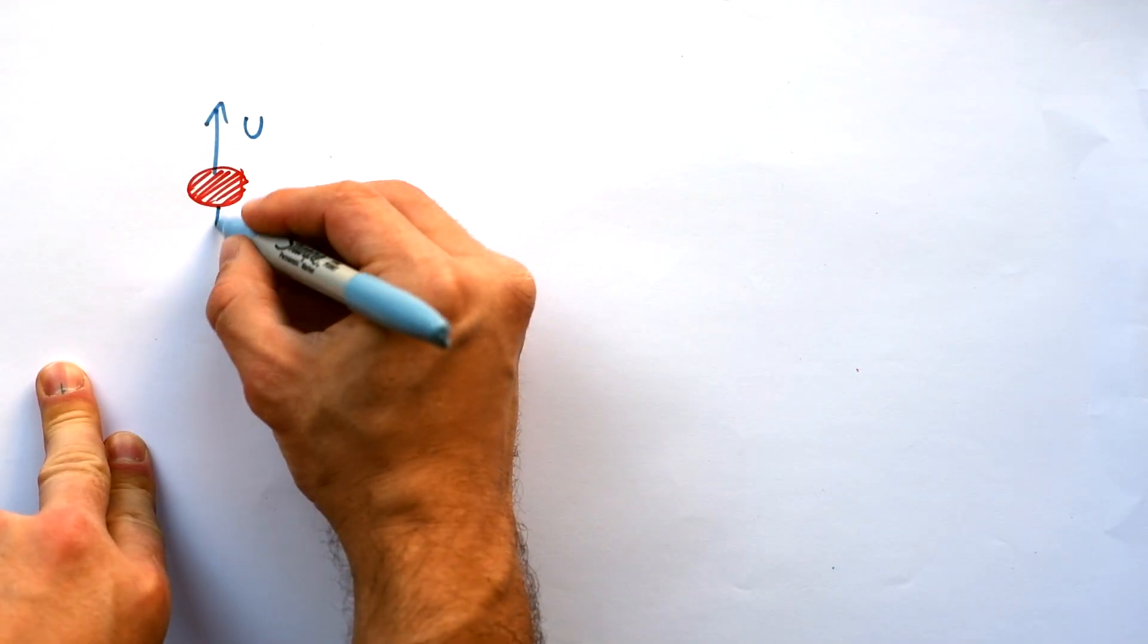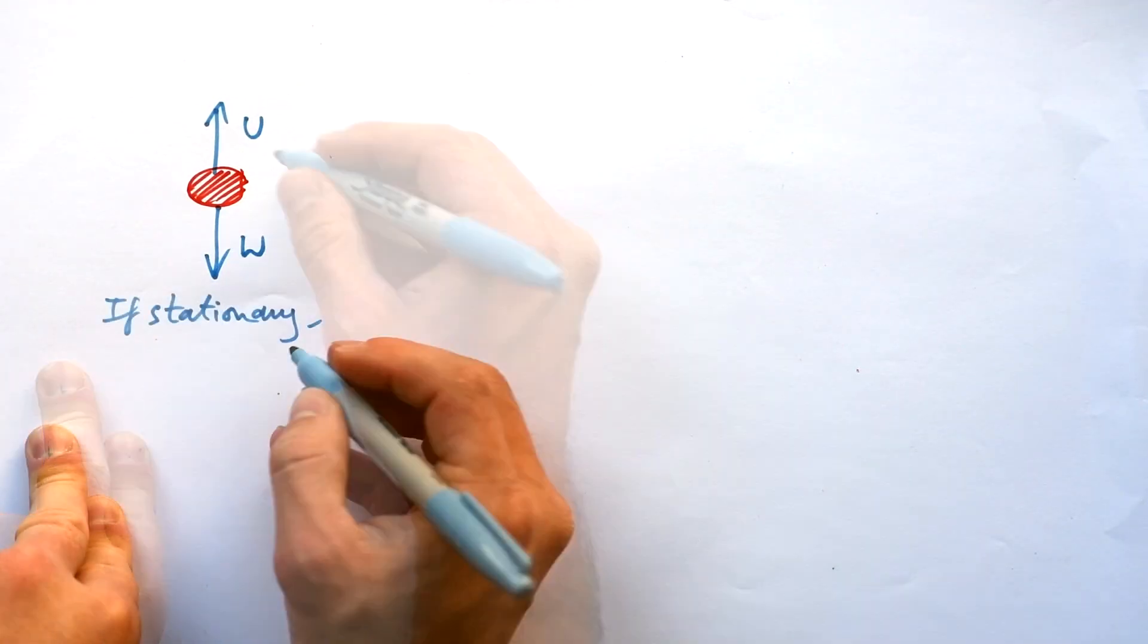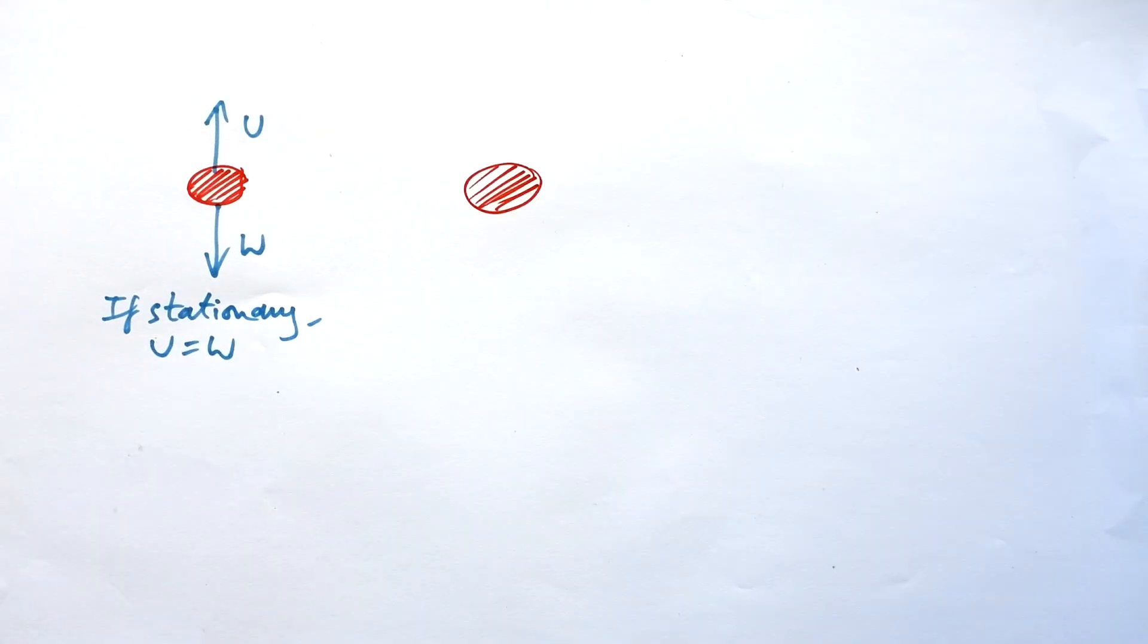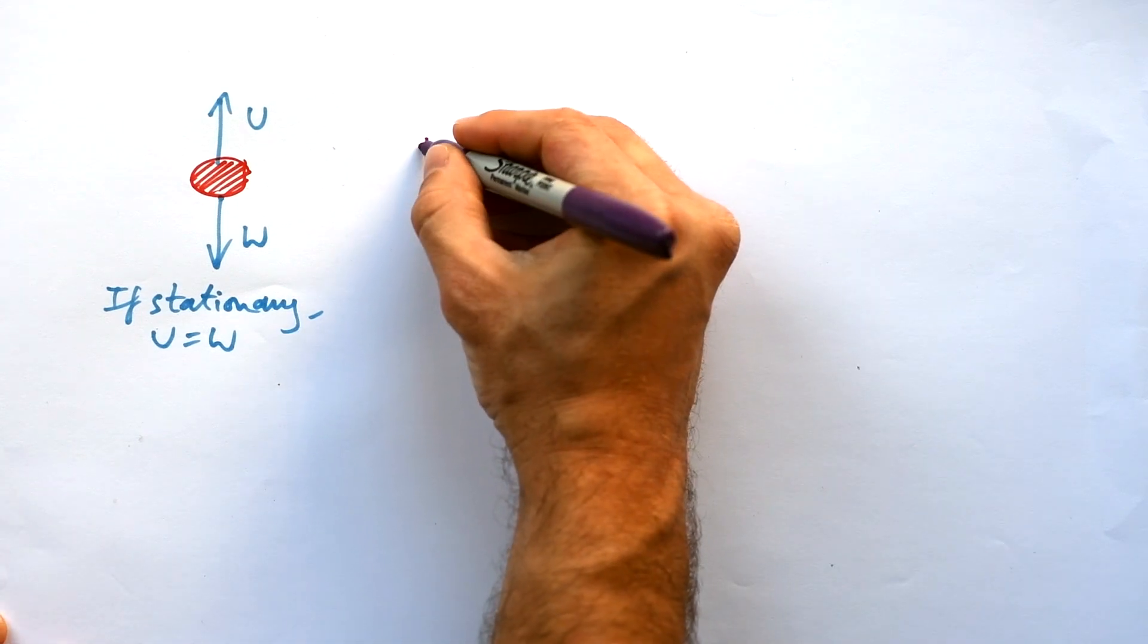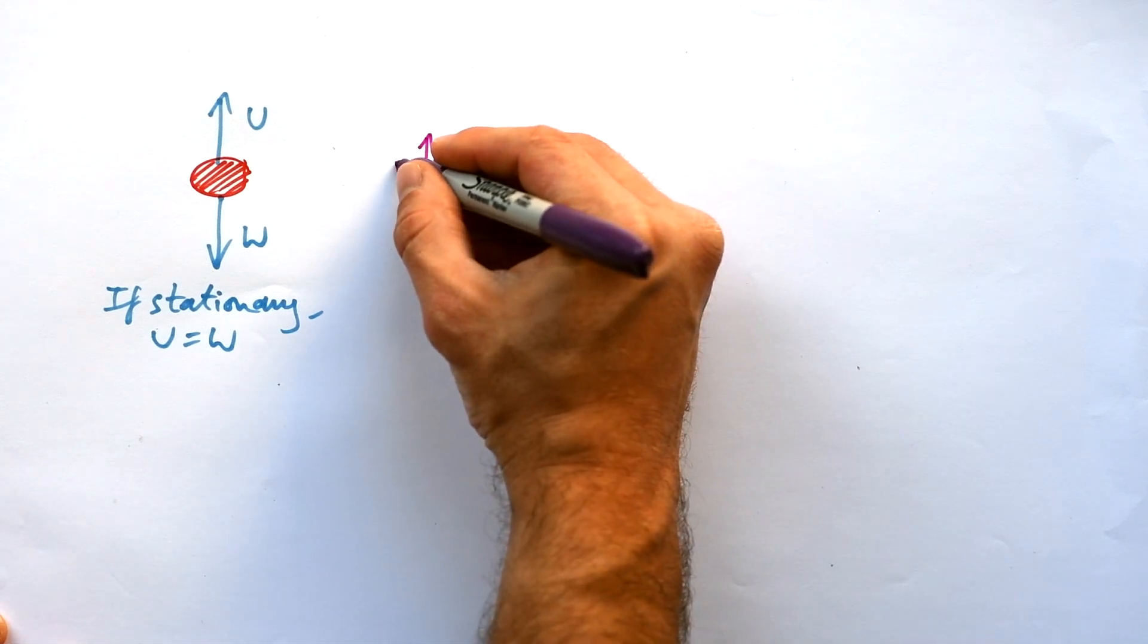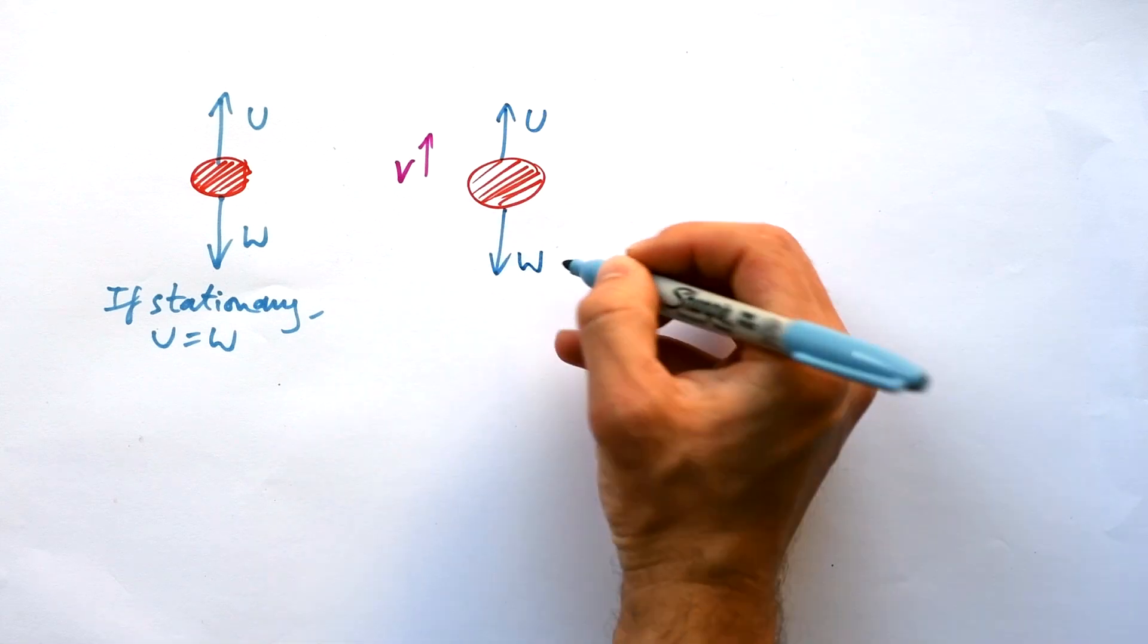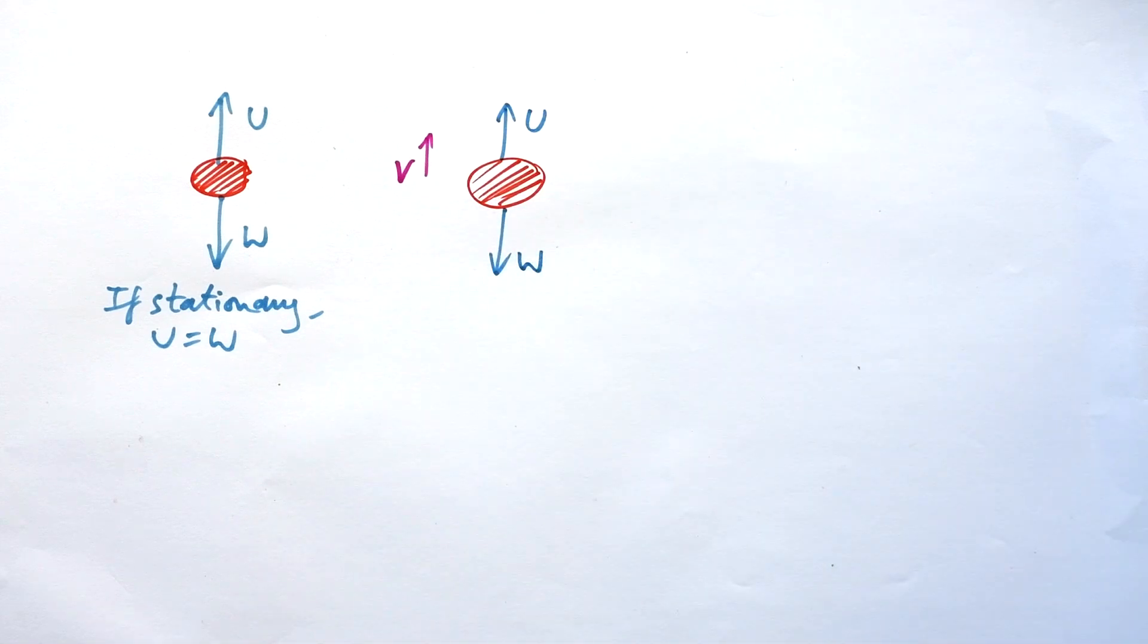So if upthrust and weight are equal, if stationary, upthrust equals weight. However, what if our ball is actually going to float, starts moving upwards? Upthrust is still there, weight is still there, but now we have an extra force.